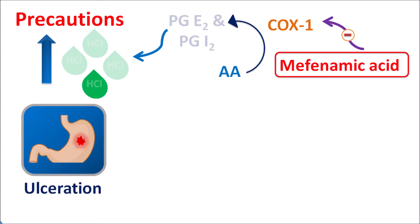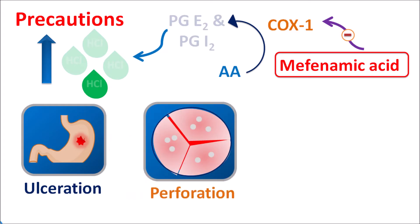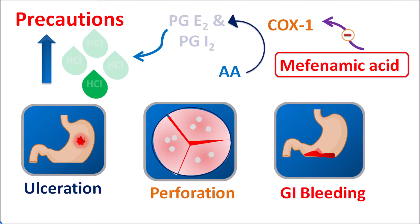This results in gastrointestinal side effects such as increased ulceration, perforation of gastric smooth muscle, and at very high doses mefenamic acid may also produce gastrointestinal bleeding. This is commonly observed with more potent NSAIDs — aspirin is one drug that can produce gastrointestinal bleeding, and if aspirin is combined with mefenamic acid it further increases the risk of gastric bleeding. Therefore mefenamic acid should be carefully used, preferably at a low dose, to reduce gastrointestinal side effects.